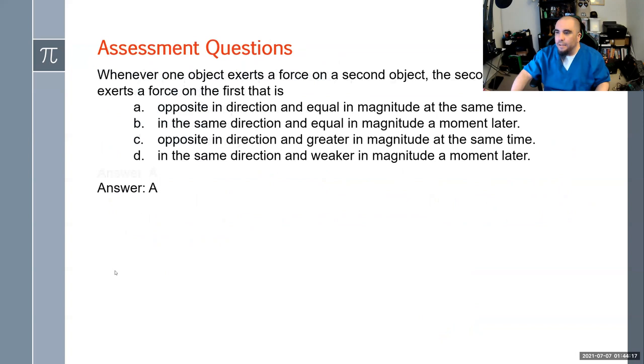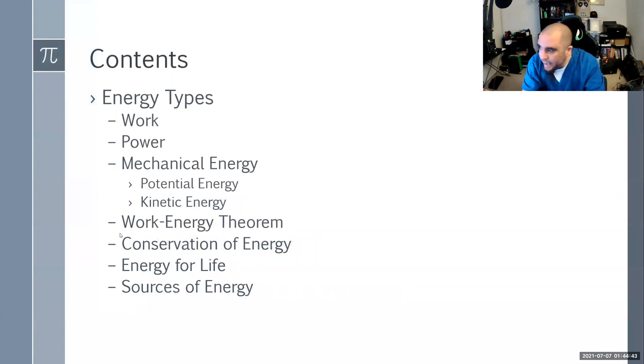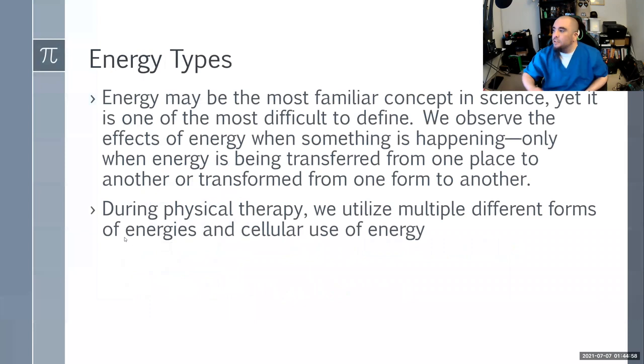Please review the assessment questions for this section. We're moving on to the next lesson: energy. Energy ties back to momentum because there is a law of conservation of energy as well as a law of conservation of momentum. With energy, we'll talk about work, power, different types of mechanical energy — potential and kinetic — the work-energy theorem, and energy for life and sources of energy.